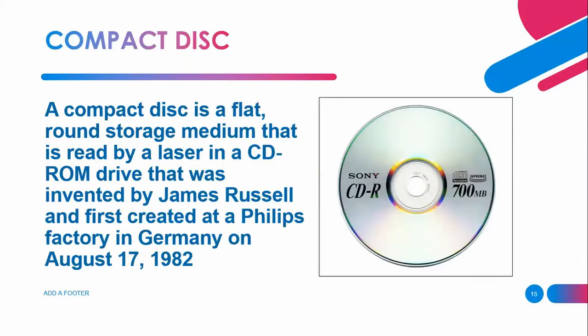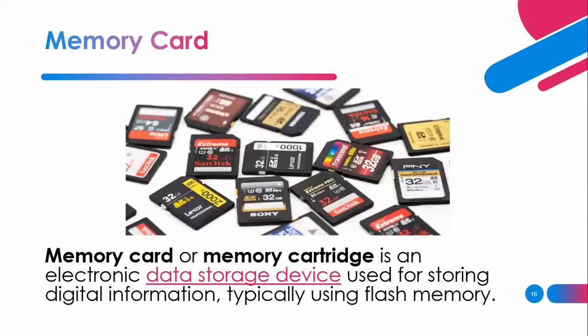A compact disk is a flat, round storage medium that is read by a laser in a CD-ROM drive, invented by James Russell and first created at a Philips factory in Germany on August 17, 1982. The memory card or memory cartridge is an electronic data storage device used for storing digital information, typically using flash memory.